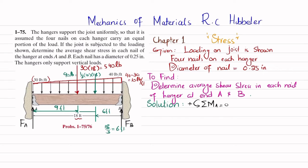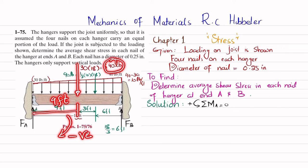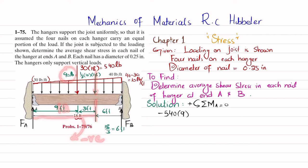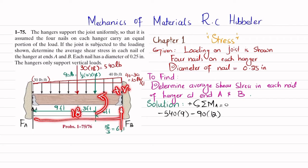We will find F_B using the sum of all moments about point A equals zero. The force at A passes through point A and produces no moment. The first moment-producing force is 540 pounds at a perpendicular distance of 9 feet — clockwise, so negative: minus 540 times 9. The second is 90 pounds at a perpendicular distance of 12 feet — also clockwise, so negative: minus 90 times 12.